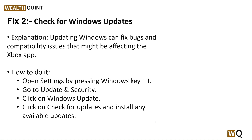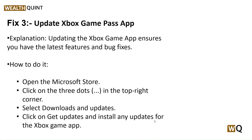Our third step is to update the Xbox Game Pass app. Updating it ensures you have the latest features and bug fixes. To do this, open the Microsoft Store, click on the three dots in the top right corner, select Downloads and Updates, click Get Updates, and install any updates for the Xbox Game Pass app.